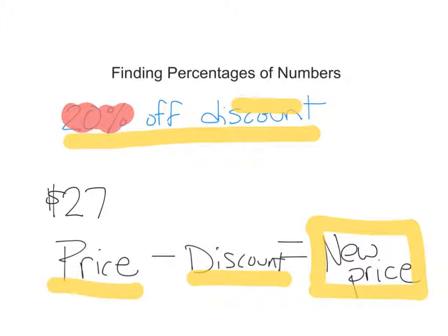To solve this problem, 20% of 27, $5.40. Simple subtraction, we get $21.60 as the new price.